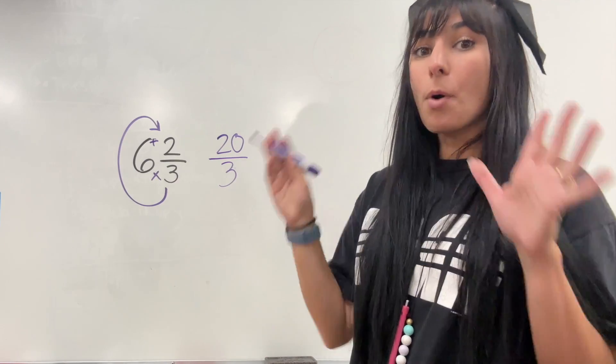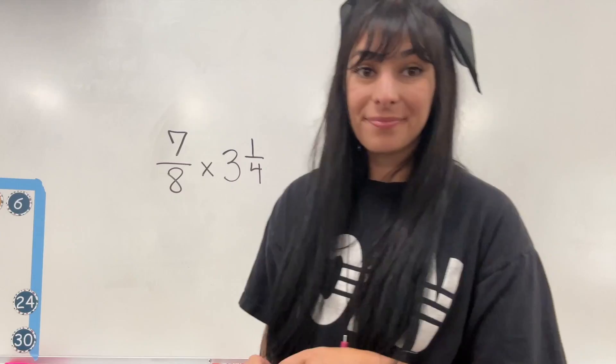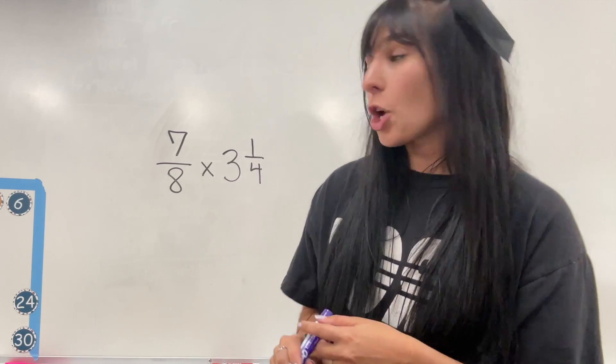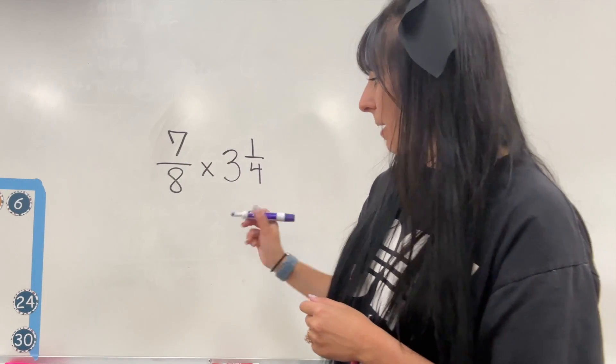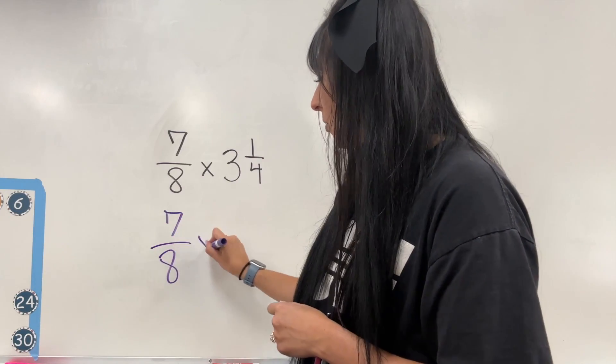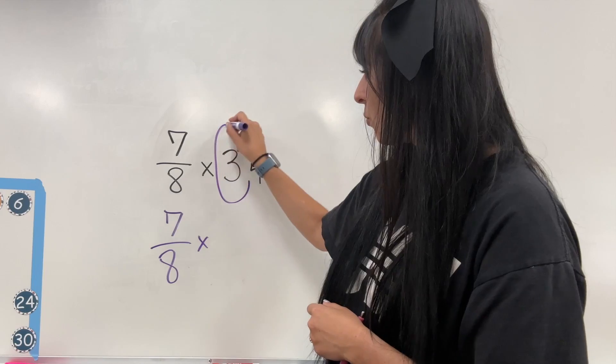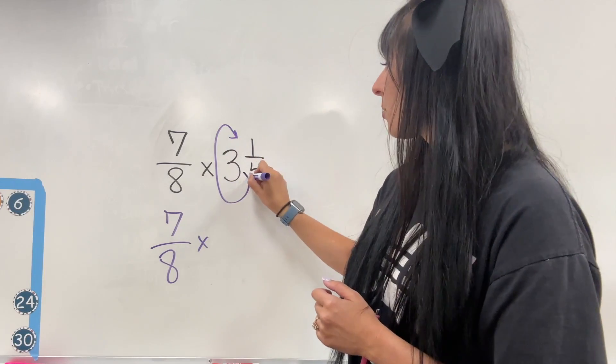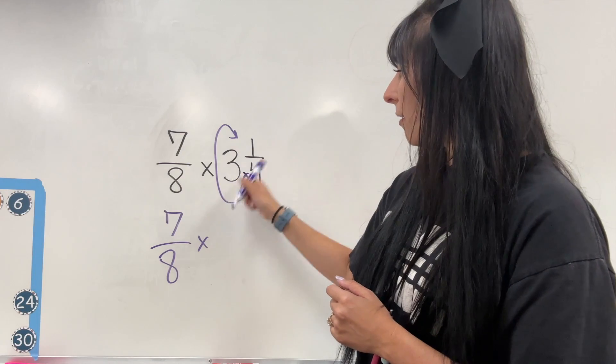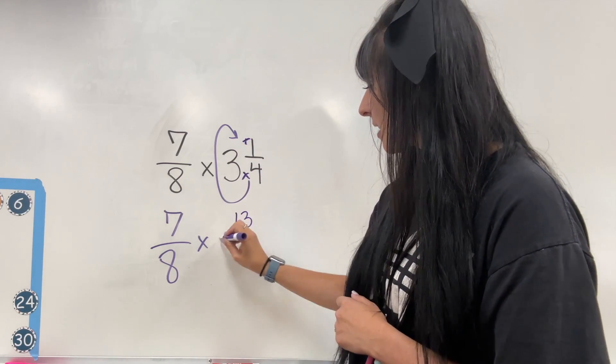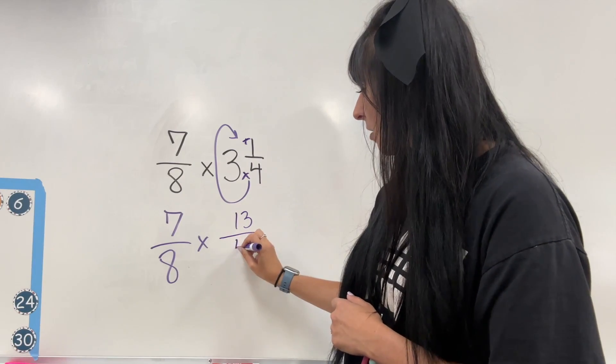Now let's actually multiply with a mixed number. So my first problem, I have seven eighths times three and one quarter. So I'm going to go ahead and keep my seven eighths, multiply, and then I'm going to do the reverse C method to turn my mixed number into a fraction. So I'm going to do three times four, 12 plus one gives me 13. So I'm going to have 13 over four.